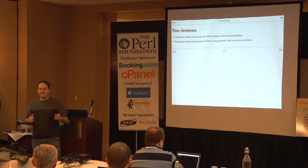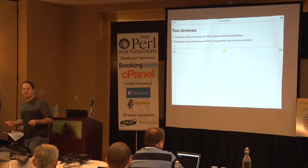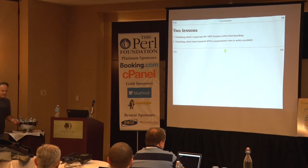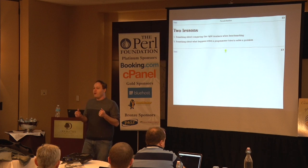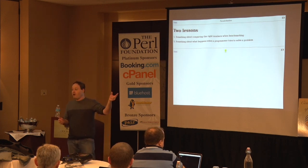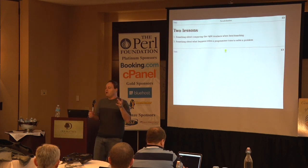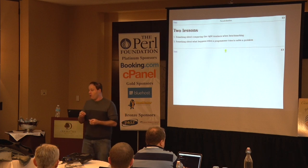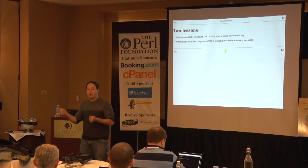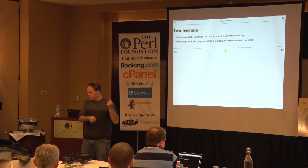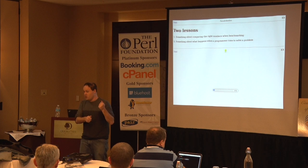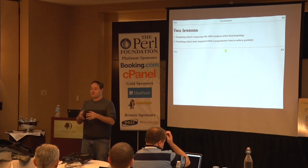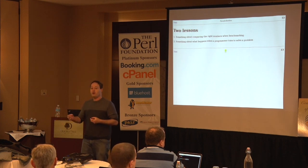My go-to example for this is SPF. A number of years ago someone got this great idea: we have this problem where people are sending spam and forging the from address. So what we're going to do is: we know that MJD@plover.com only sends mail out of servers A, B, and C. When you're about to get mail from MJD@plover.com, you do a DNS lookup and ask: is this mail server actually allowed to send mail from MJD@plover.com? And if not, you reject it.